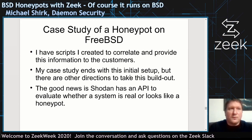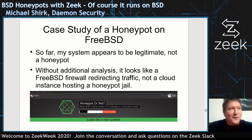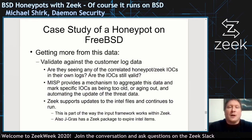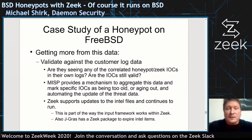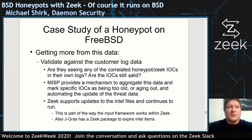Shodan has the ability to check an IP address and say whether it's a honeypot or not, and so far my system still looks like a real system — if anything it looks like a FreeBSD firewall redirecting traffic, not a cloud instance hosting a honeypot jail. There's value in looking at your custom logs: are your IOCs good? Are you just seeing specific scanners? Are they hitting other systems? MISP has the ability to age out some things. There's a way in Zeek to expire Intel items — adding new indicators, aging them out, and keeping your Zeek jail up to date as you monitor for attacks.